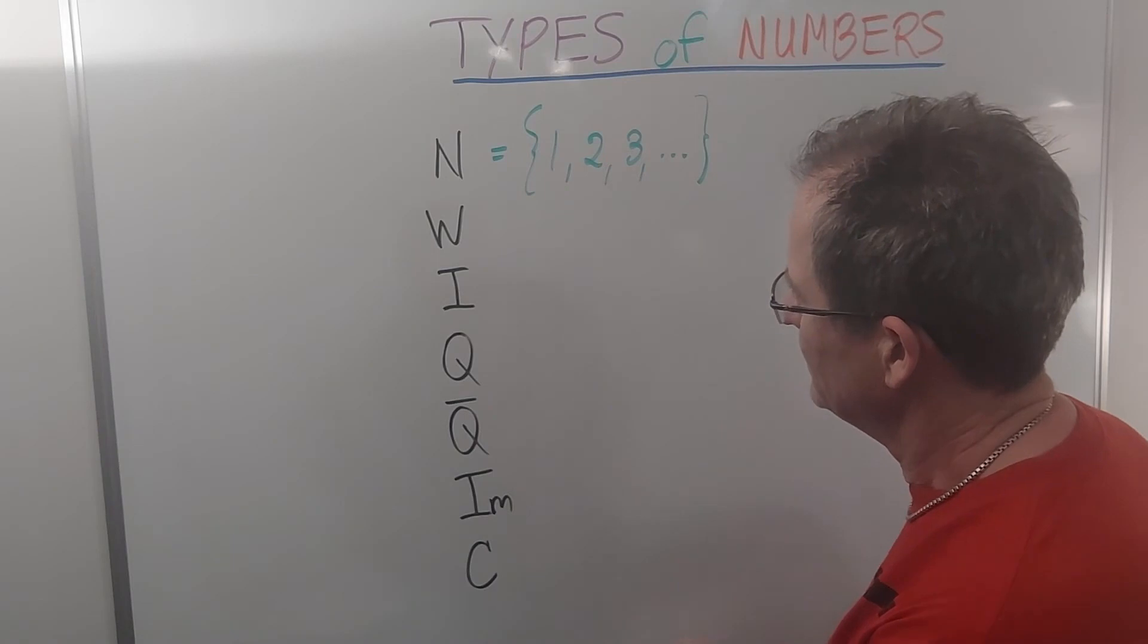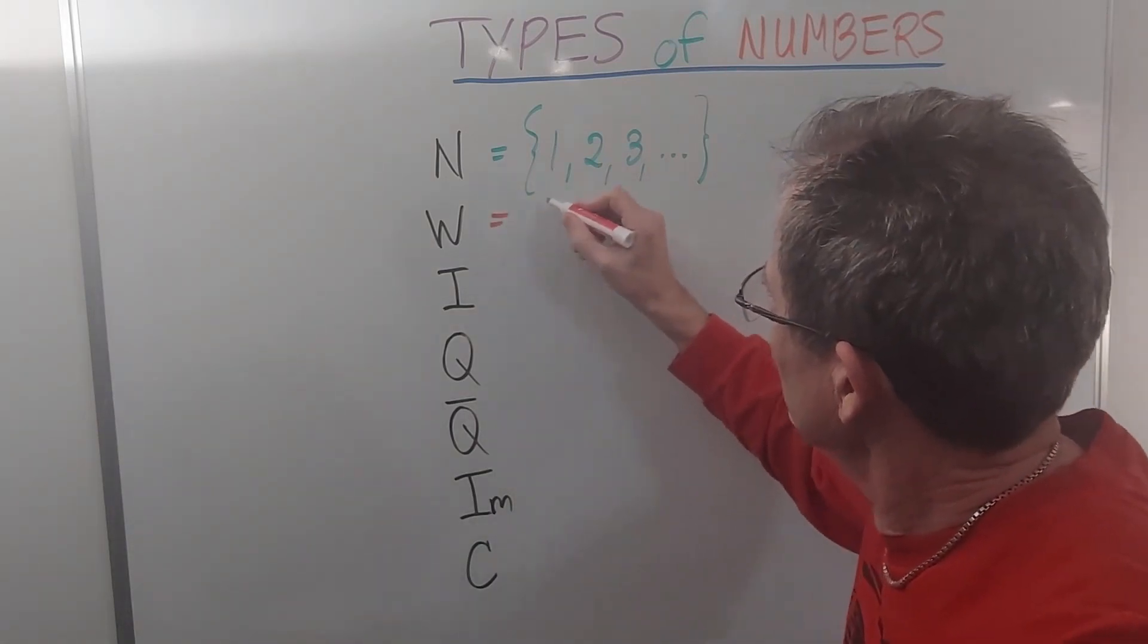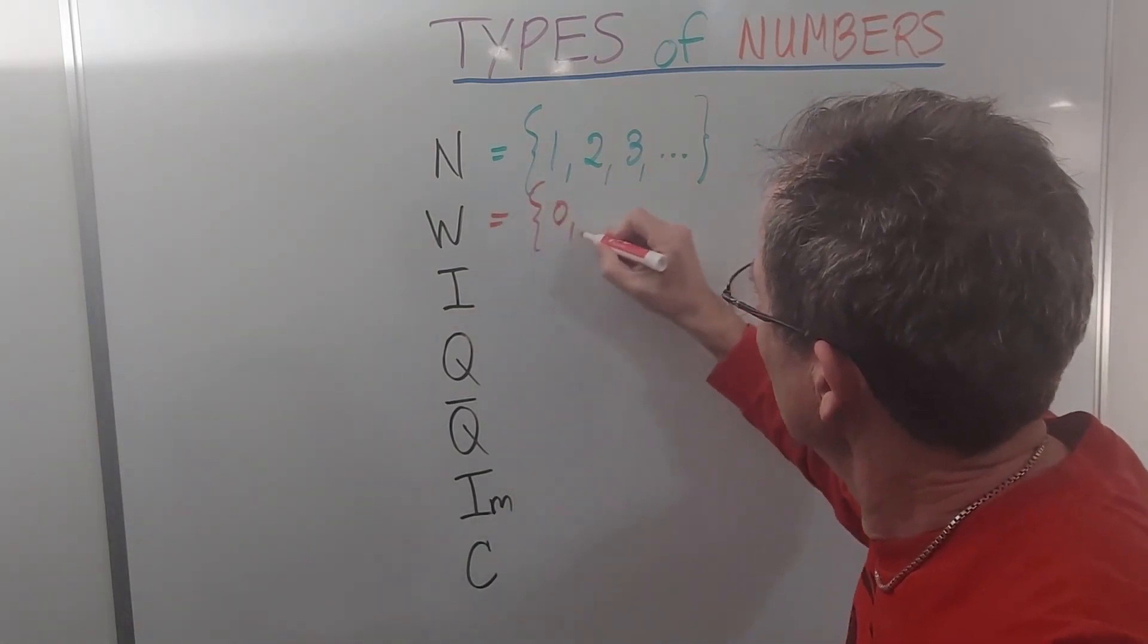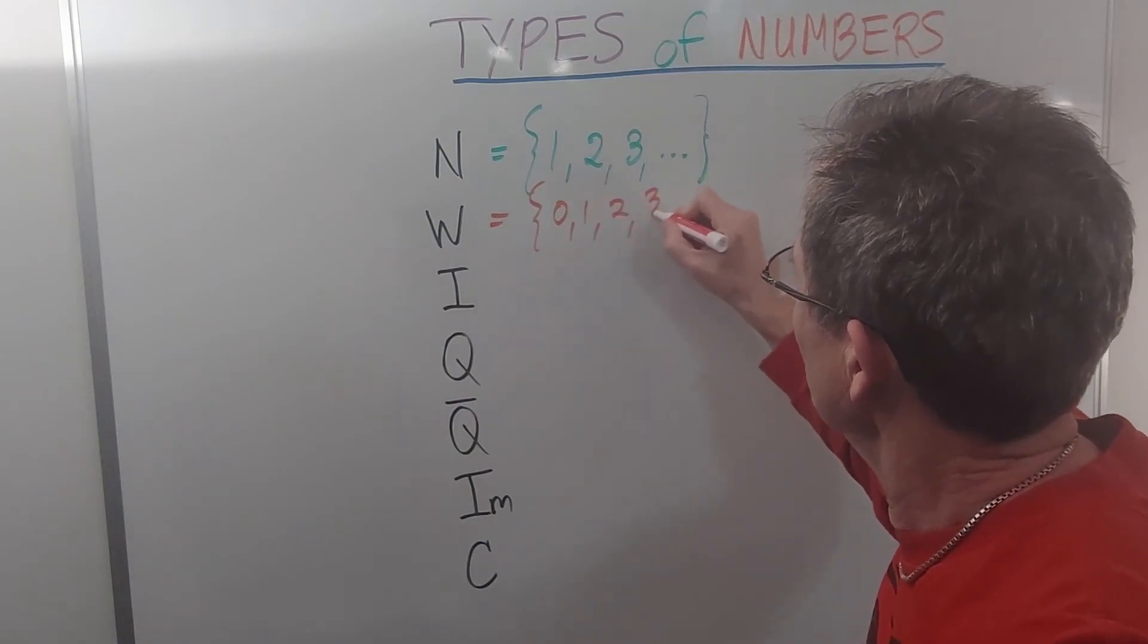The whole numbers simply include 0, so 0, 1, 2, 3, to infinity.